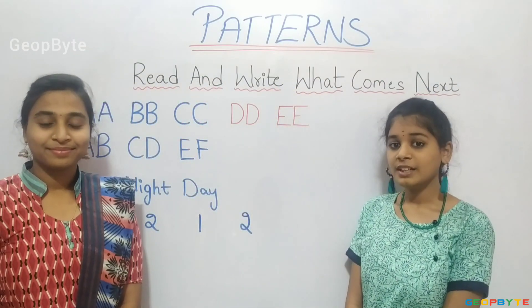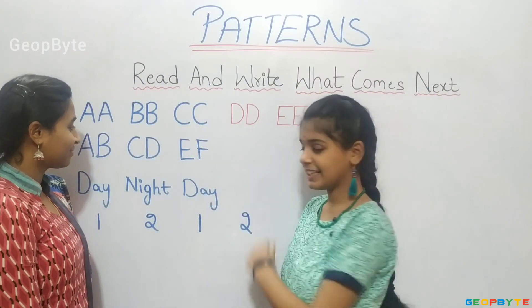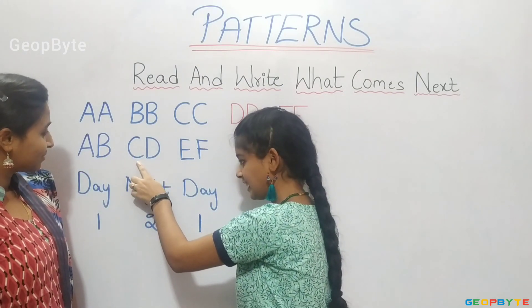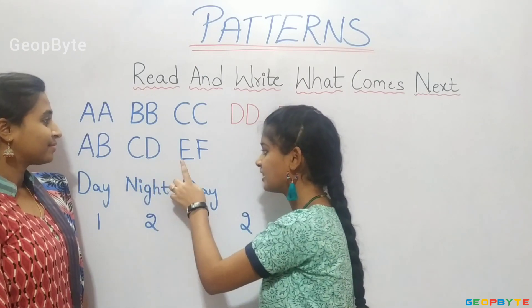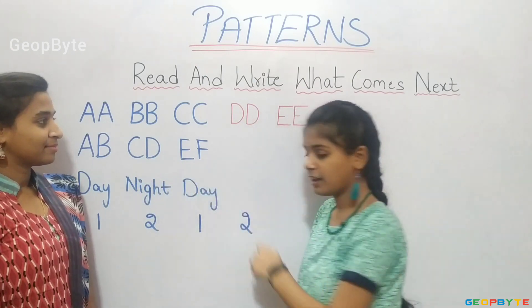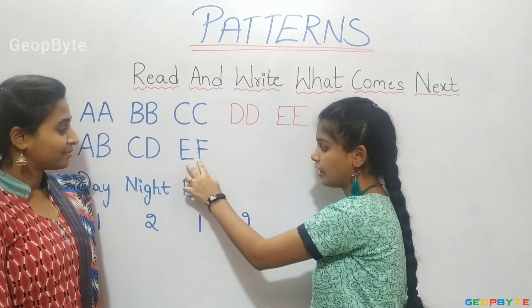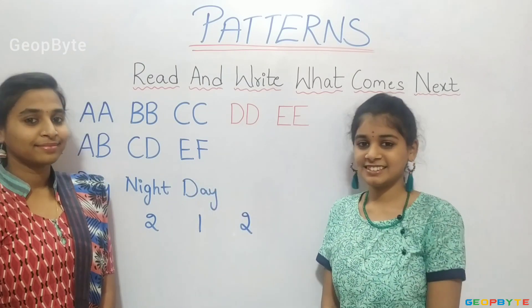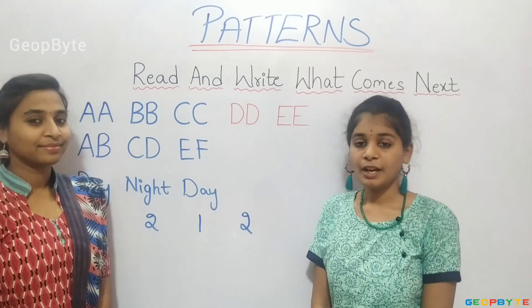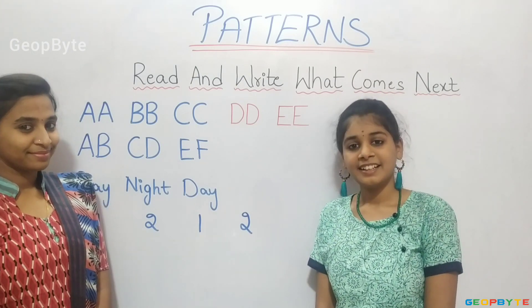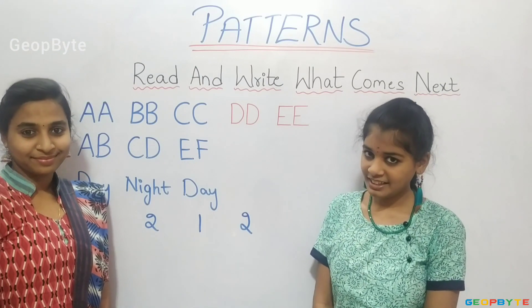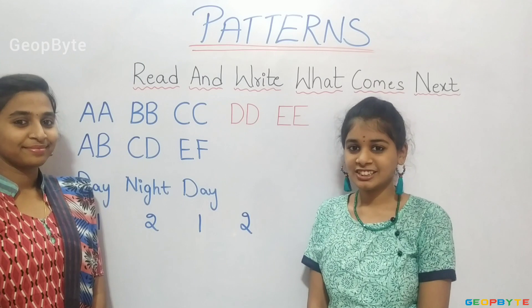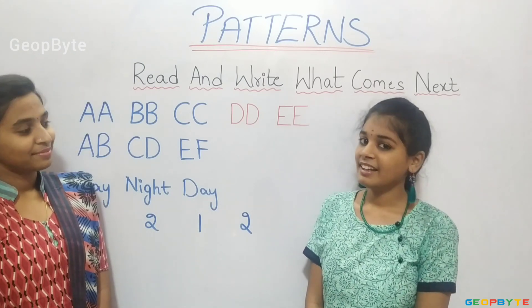Now let us see this example. A, B, C, D, E, F. After E, F — which two letters come? Let us see. A, B, C, D, E, F, G, H. Let us write G, H.